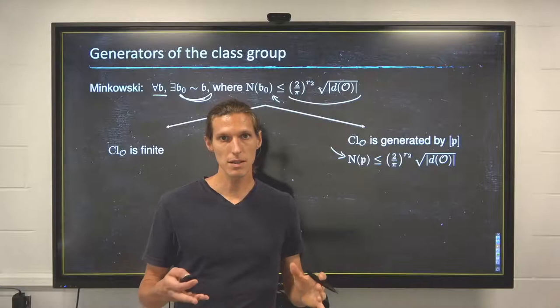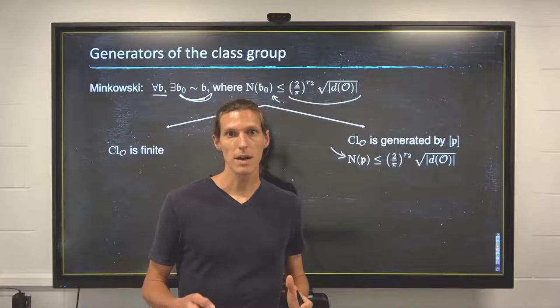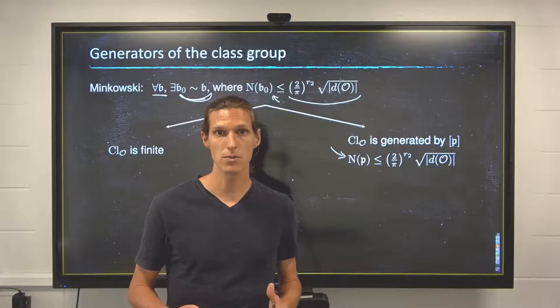So anything that we do that requires to even look at those generators would automatically be something that runs in exponential time. So that's why there are so few unconditional efficient algorithms when it comes to non-trivial computations on the class group.